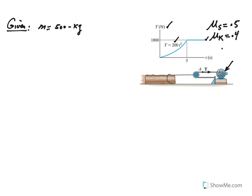We want to find the speed of this 500 kilogram log when t equals five seconds, and we were told that initially the crate or the log is at rest.